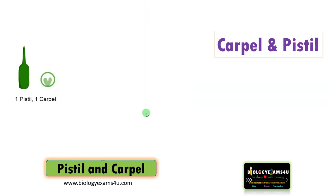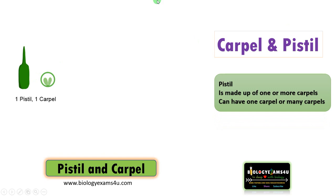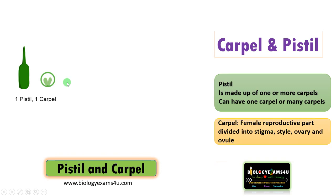The next confusing term is carpel and pistil. Here, this is a pistil — it is made up of one or more carpels. In this case there is only one pistil, which can have one or more carpels. Here there is only one carpel. A carpel is a female reproductive part divided into stigma, style, ovary, and ovule.